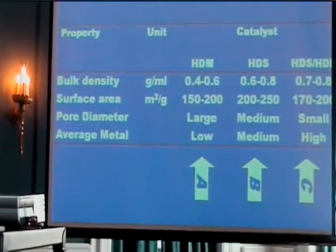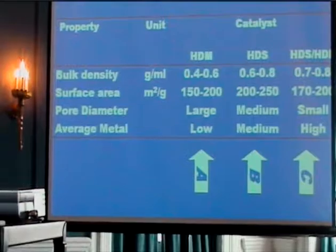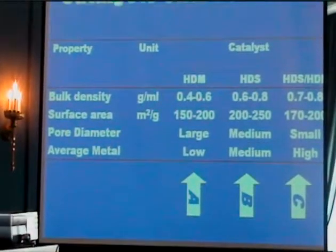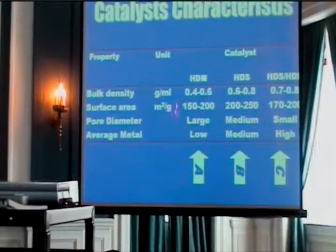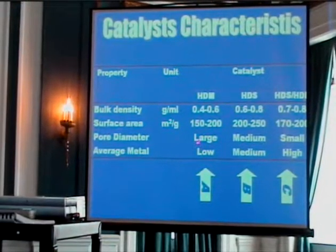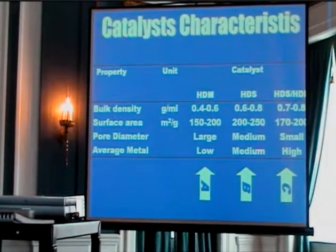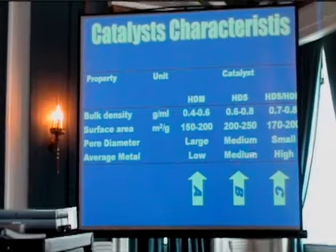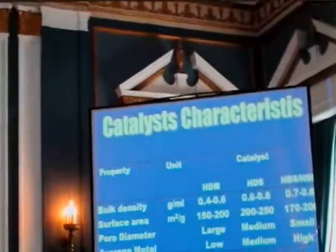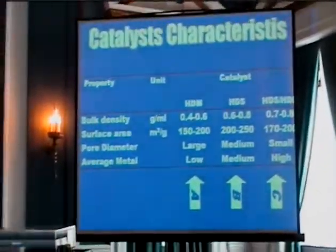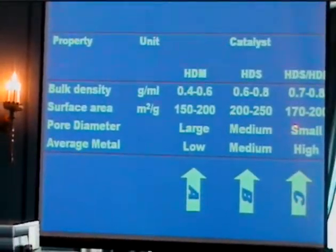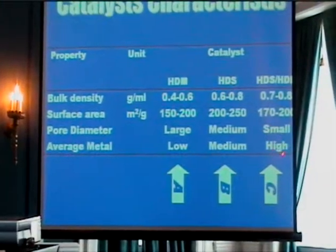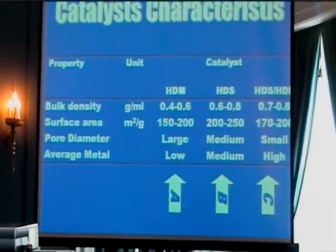As we can see from this table, catalyst A is more dedicated for metal removal, so it uses a large pore diameter and has low metal loading. When we go to the second catalyst, the metal loading is medium and the pore diameter is medium. The last catalyst, since it is more dedicated for hydrogenation and hydrocracking, has a small pore diameter; however, the metal content is much higher compared to the other two.